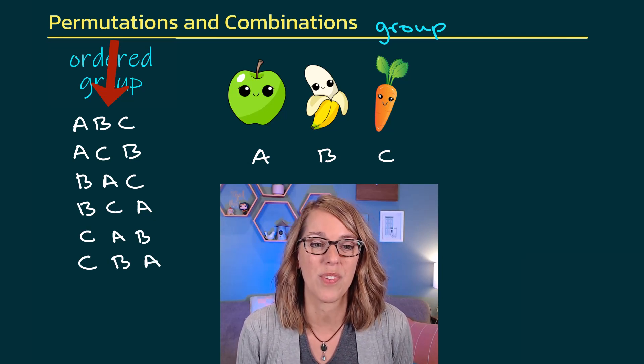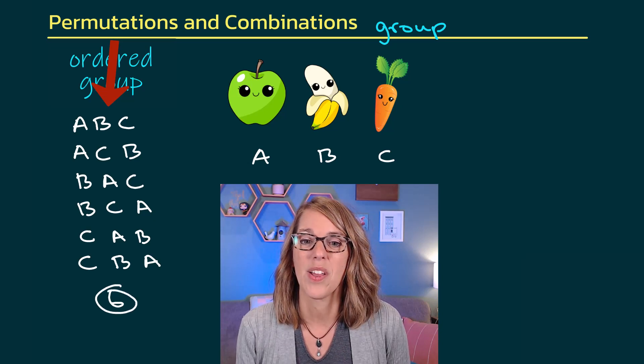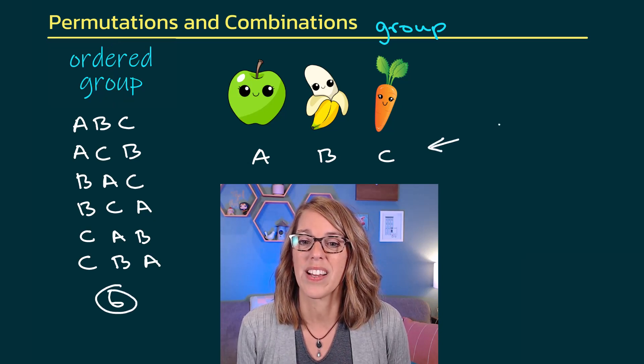I've got 1, 2, 3, 4, 5, 6 different permutations, but just one combination.